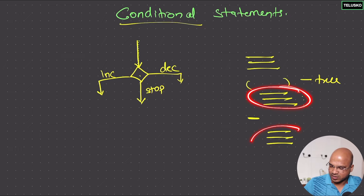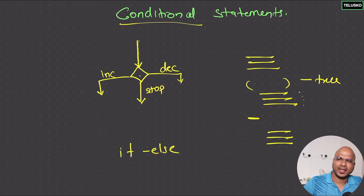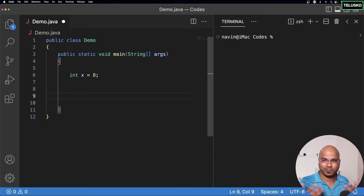In programming, you write statements and then decide to execute a bunch of statements based on some condition. We have a condition — if the condition is true, you execute this particular block; if it is false, you execute another set of lines. We have talked about boolean values, relational operators, and logical operators. The way you do that in programming is with the help of if-else, which is similar to most languages.